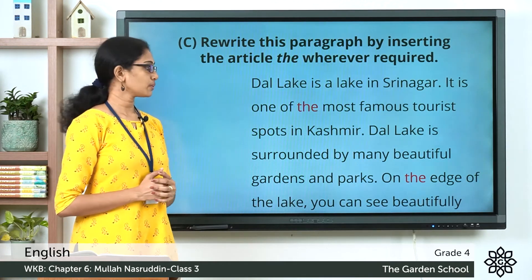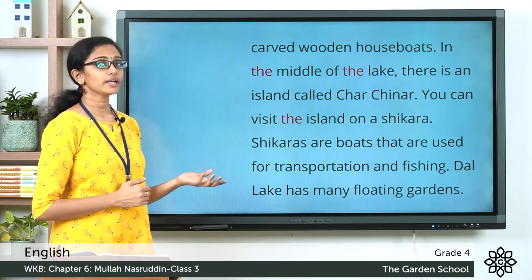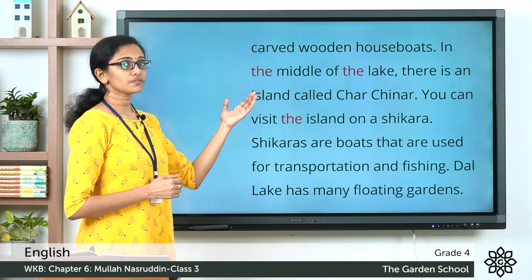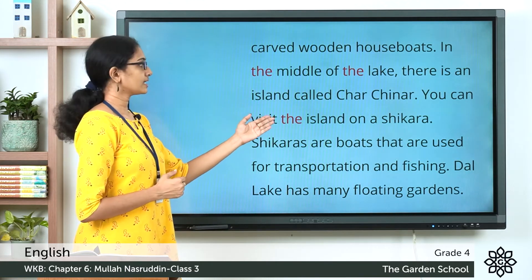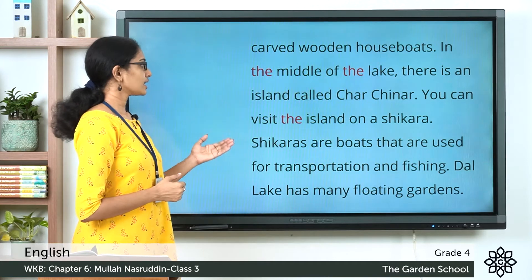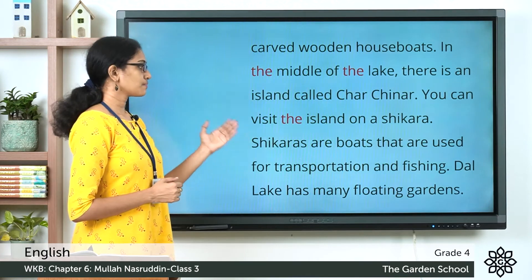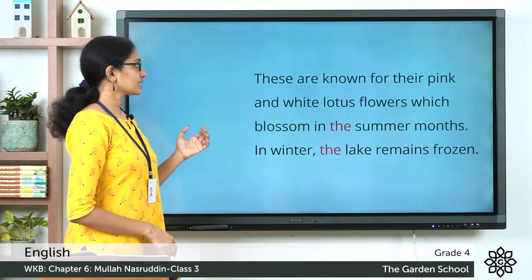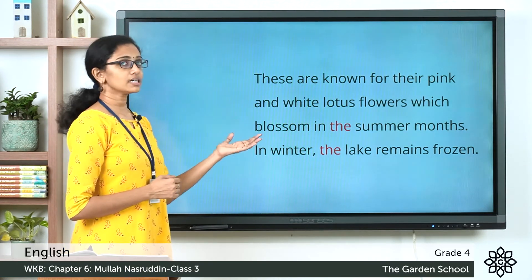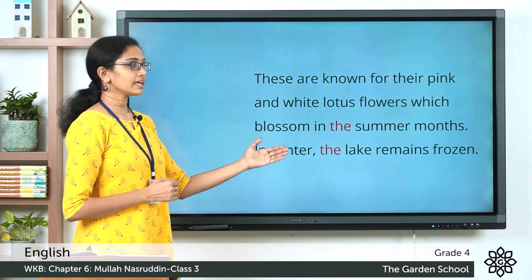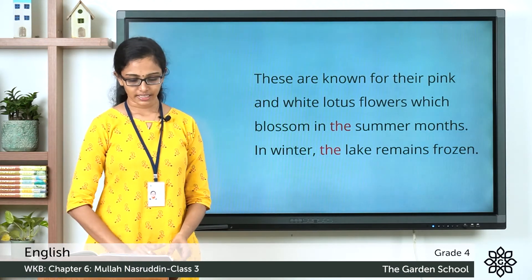Dal Lake is surrounded by many beautiful gardens and parks. On the edge of the lake you can see beautifully carved wooden houseboats. In the middle of the lake there is an island called Char Chinar. You can visit the island on a shikara. Shikaras are boats used for transportation and fishing. Dal Lake has many floating gardens, known for their pink and white lotus flowers which blossom in the summer months. In winter the lake remains frozen.